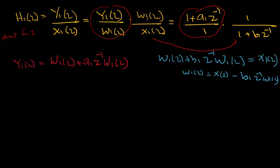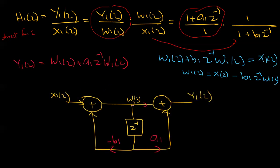W1 of z multiplied by 1 plus b1 z-inverse equals x1 of z. Taking that, w1 of z equals x of z minus b1 z-inverse times w of z. This gives us the Direct Form 2 relations for the first section.